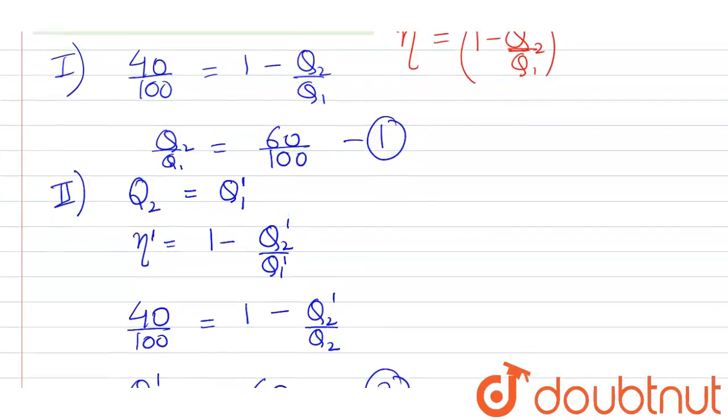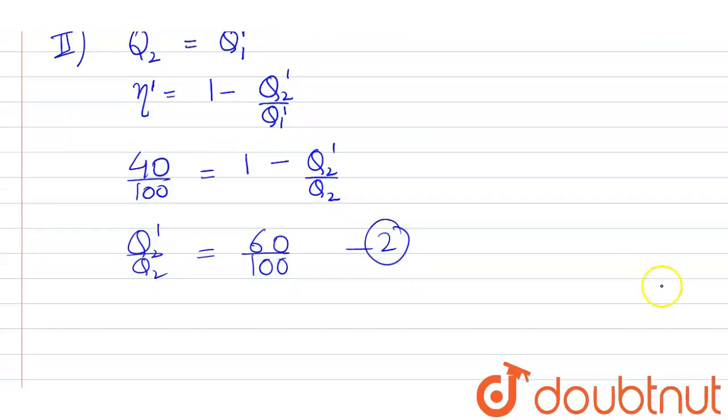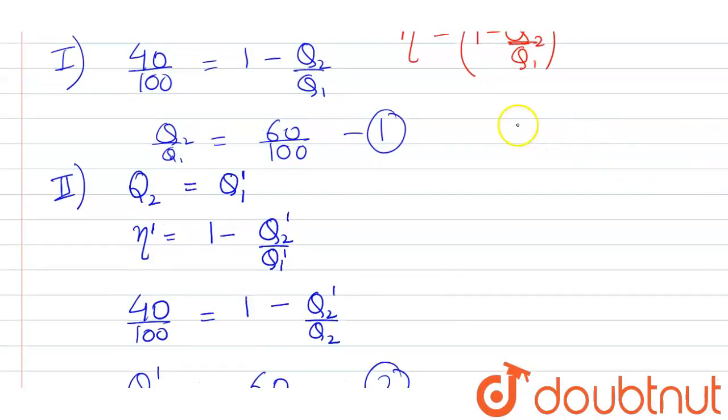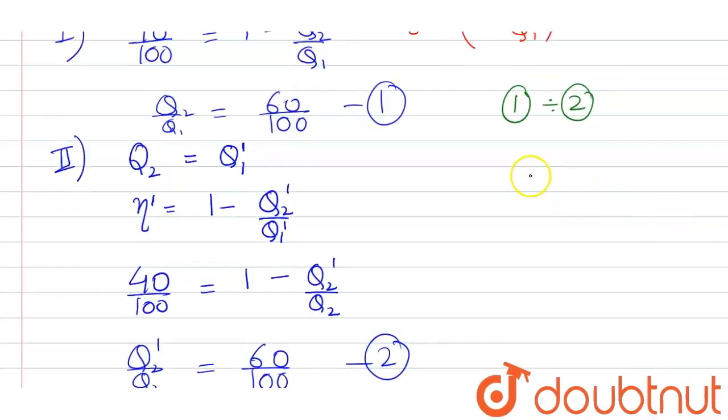And now we have to find the overall efficiency of the system. So what we do, we first divide equation 1 with equation 2.